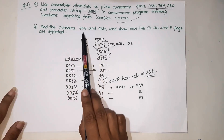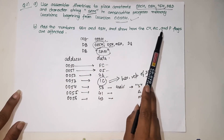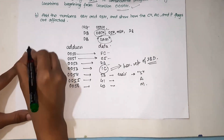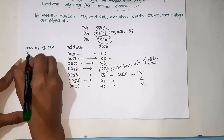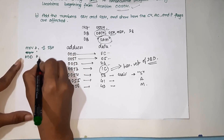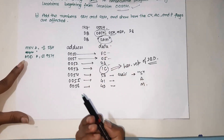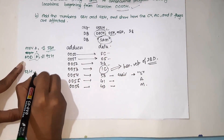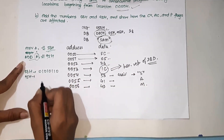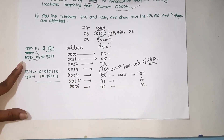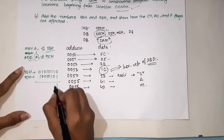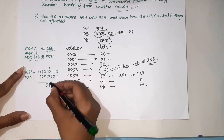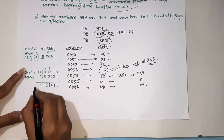Next example: add the numbers 56h and 95h and show how the carry flag, auxiliary flag, and parity flag are affected. First, move 56h into register A, then add 95h to A. The binary representation of 56h is 0101 0110 and 95h is 1001 0101. Adding these gives: 1110 1011, with carries propagating through. The result in hexadecimal is EBh.